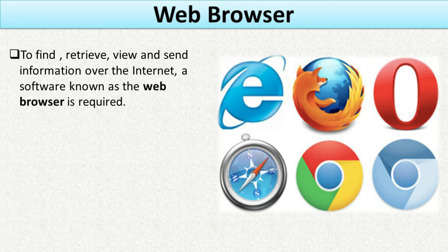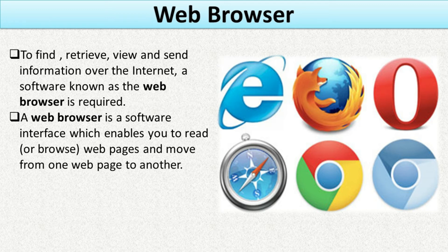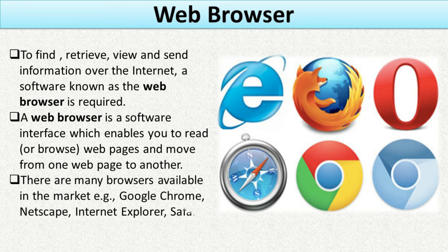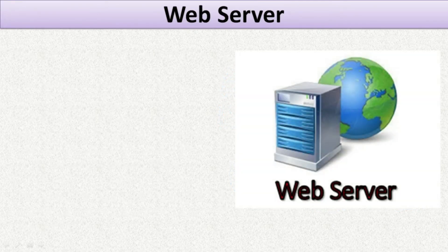To find, retrieve, view, and send information over the internet, a software known as a web browser is required. A web browser is a software interface that enables you to read web pages and move from one web page to another. There are many browsers available, for example: Google Chrome, Netscape Navigator, Internet Explorer, Safari, and Opera.